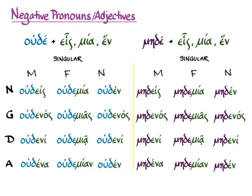We see this very often as a pronoun, meaning 'no one' if it's masculine or feminine, or 'nothing' if it's neuter. But you can use it as an adjective as well with a noun, in which case it will mean 'no' — as in 'we have no sugar' or something like that.